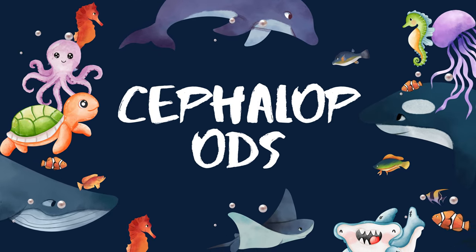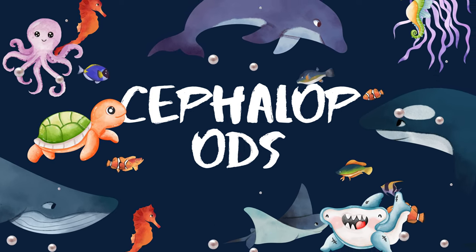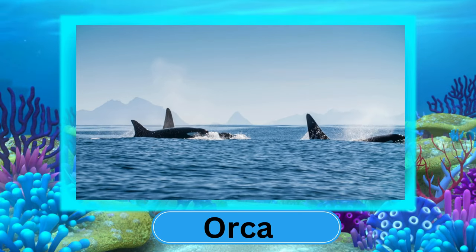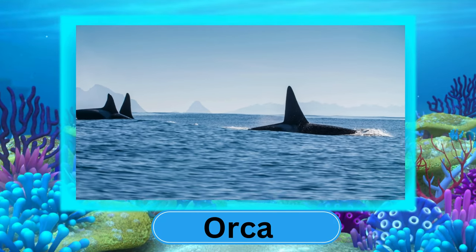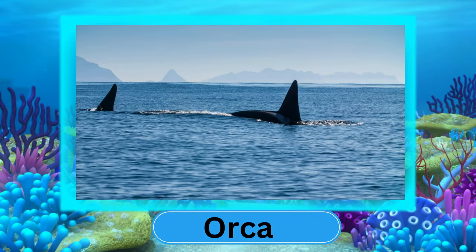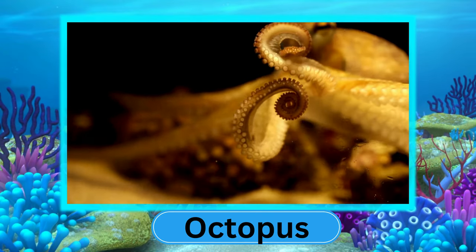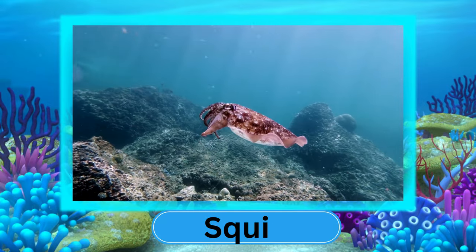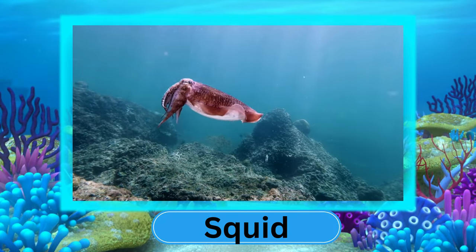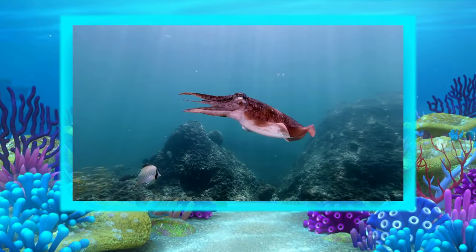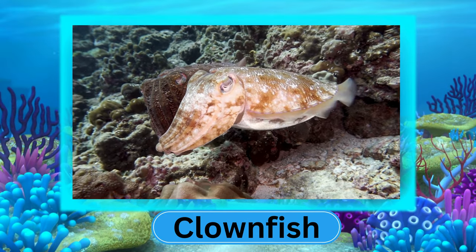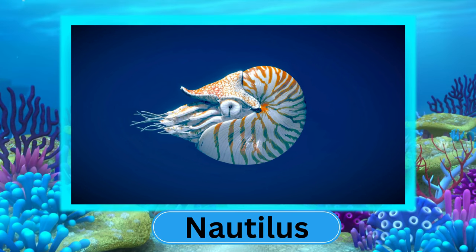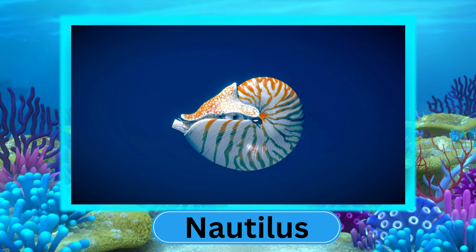Cephalopods. These are a class of mollusks characterized by bilateral body symmetry, a prominent head, and a set of arms or tentacles. Let's see some common examples: Octopus, Squid, and Nautilus.